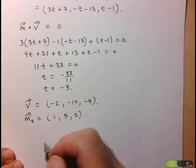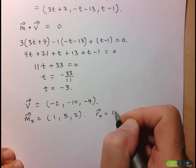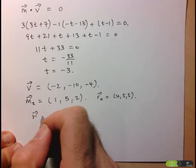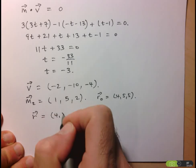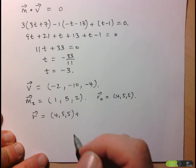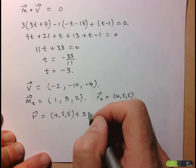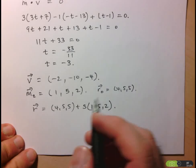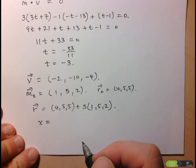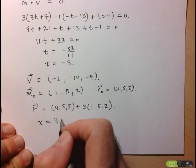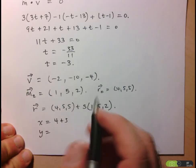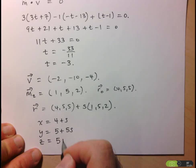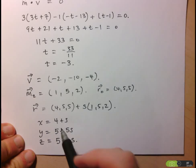Now I have direction vector (1, 5, 2) and point (4, 5, 5). In vector form: R = (4, 5, 5) + s(1, 5, 2), using s as the parameter since t was used for the other line. In parametric form: x = 4 + s, y = 5 + 5s, z = 5 + 2s. We now have two versions of the equation of the line.